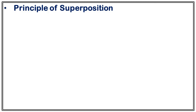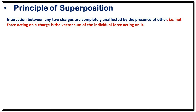The second important principle in electrostatics is the principle of superposition. Why do we need it? Suppose we have more than one source charge and we want to calculate the force exerted by a whole bunch of charges on a single charge. The principle of superposition states that the interaction between any two charges is completely unaffected by the presence of others. The net force on a charge is just the vector sum of the individual forces. First calculate the force from one charge, then another, then add them all up.